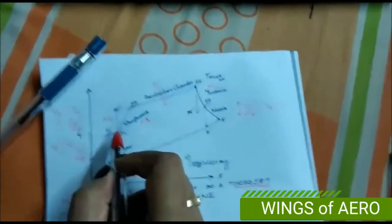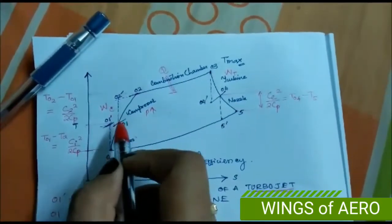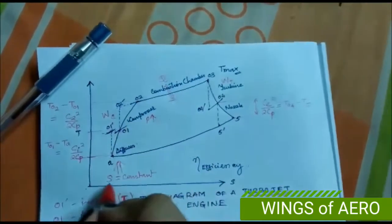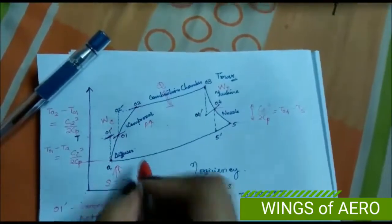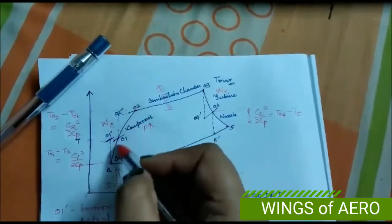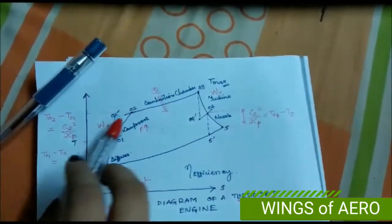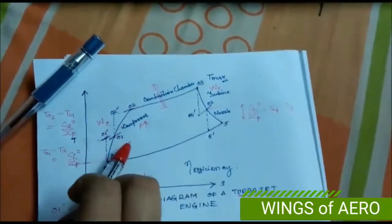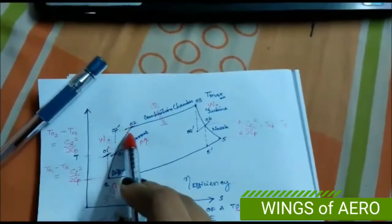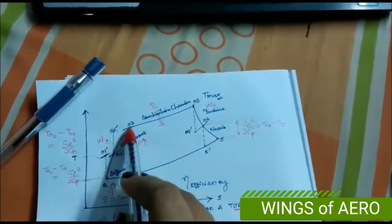The dotted line from 0-1 to 0-2 dash represents the isentropic condition where S is constant. In the actual condition, 0-1 to 0-2, there is a curved inclination indicating an increase in temperature with respect to entropy. After the compressor, the pressurized air leaves and enters the combustion chamber.